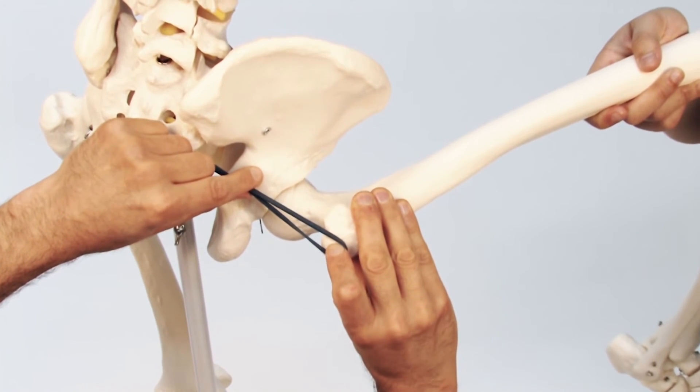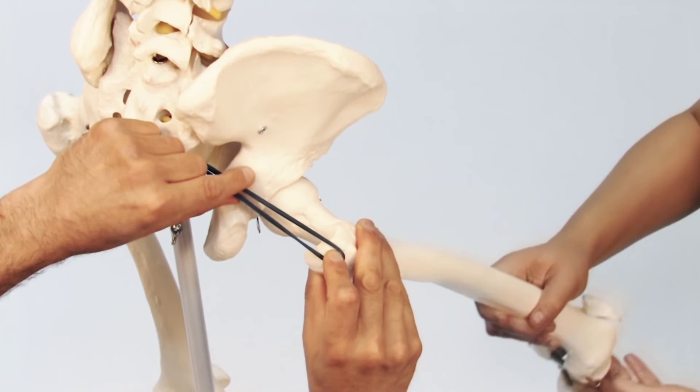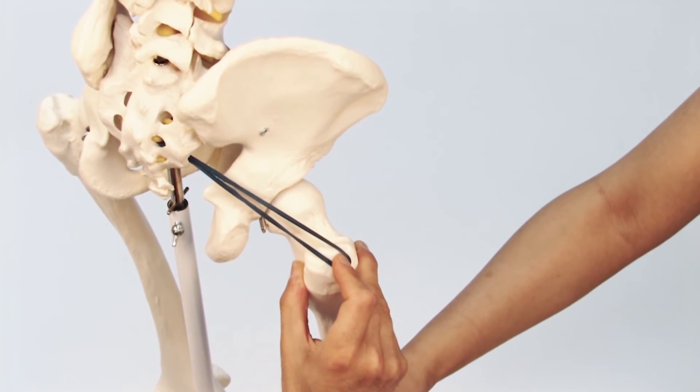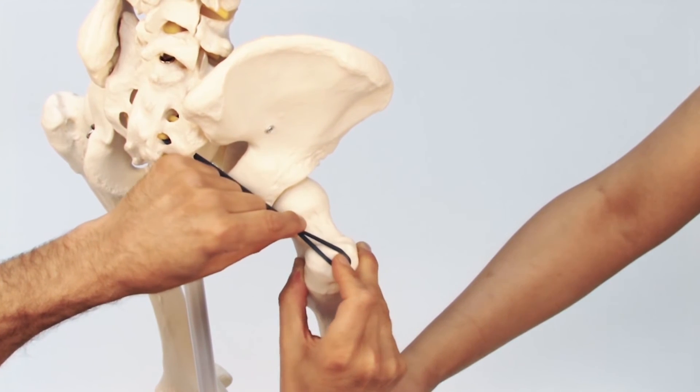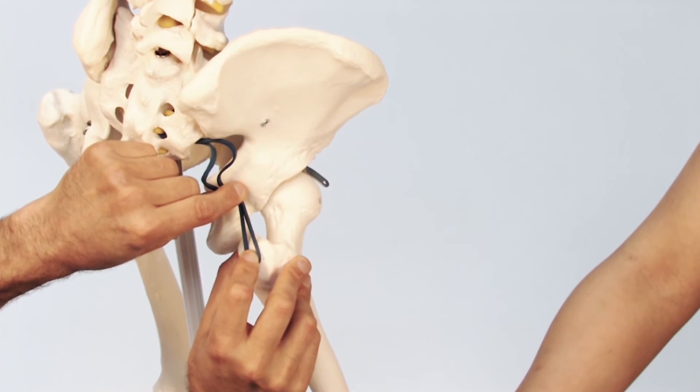So bringing it back down, when we state that the piriformis is a lateral rotator, that is its anatomic action because that is its action when the thigh is in anatomic position.